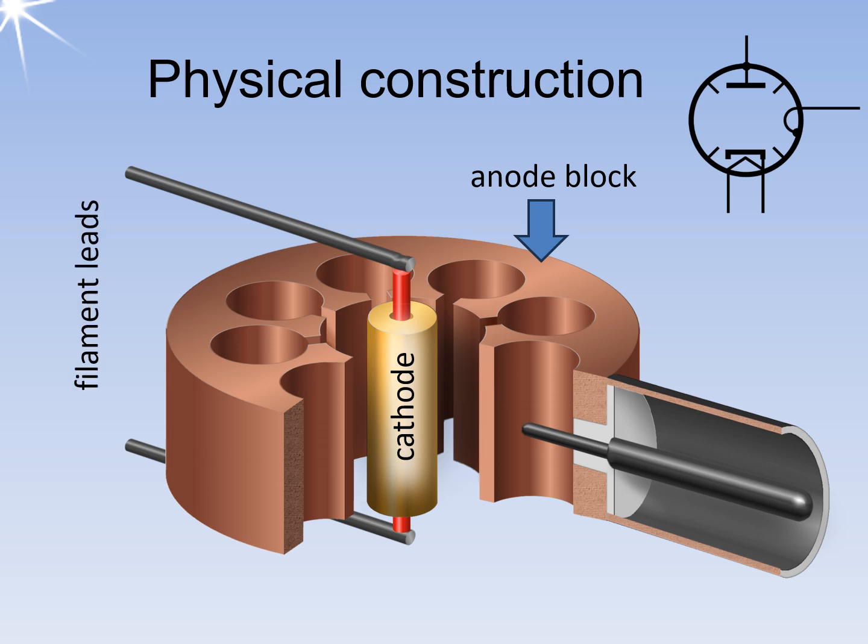The cathode is held in place by the stable filament leads. For safety reasons, the anode block is at earth potential. This means that the cathode and filament leads are at a very high negative voltage potential. Therefore, the cathode is always directly heated and electrically connected to one of the filament leads.